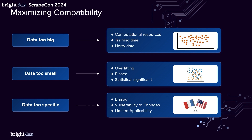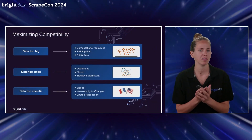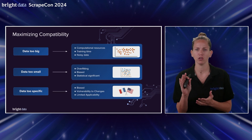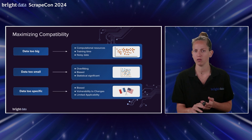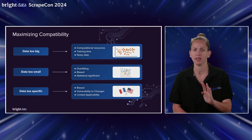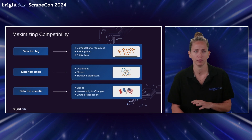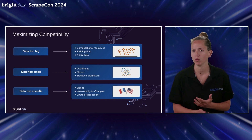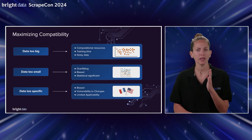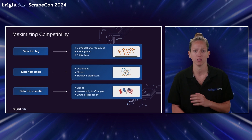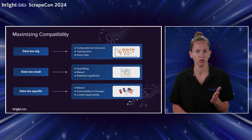Size and diversity are the most important things when working with statistical models. What will happen if the data is too large? Besides excessive time and computational cost, it can also cause the data to be very noisy, which can mask patterns in the data and affect model predictions. If the data is too small, it will be very difficult to achieve statistical significance. It can cause overfitting, where the model can only work with the examples it was trained on and can't adapt to new data.